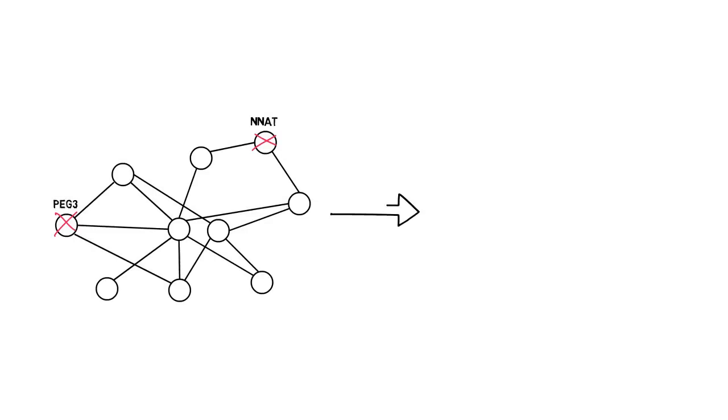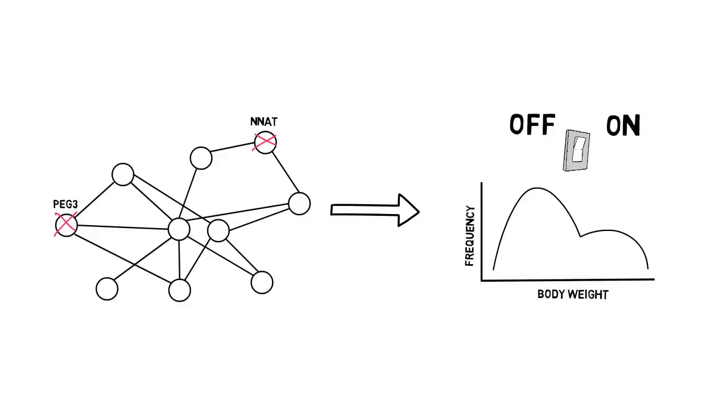Interestingly, what we also found was that deleting other members of the imprinted gene network also triggered a bistable epigenetic obesity on inbred backgrounds. This indicated that the members of the network were acting together, creating something like a switch that flips the DNA output to either lean or obese.